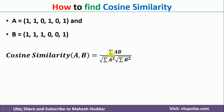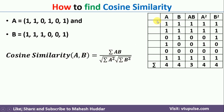Now, in this equation, we need to know the value of summation of AB, summation of A squared, and summation of B squared. I will create a table which will have all these particular values. I have written A here, B here, and I have calculated AB, then A squared, and then B squared.